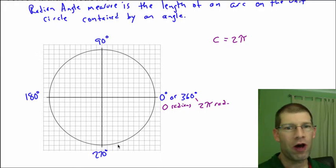So we know then that this here, all the way around, our 0 degrees would be 0 radians, 360 degrees would be 2 pi radians.